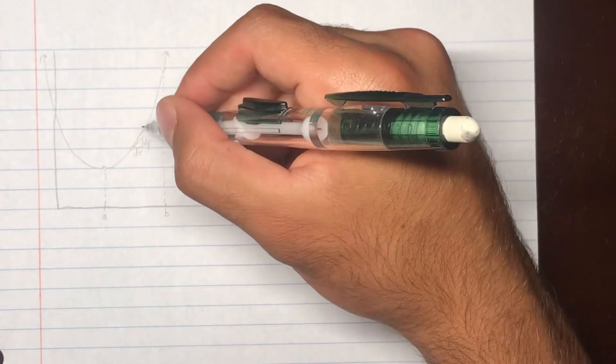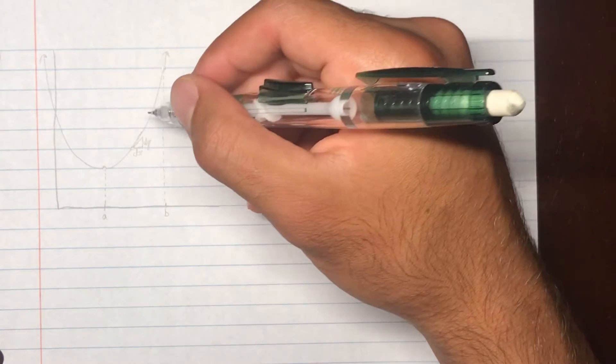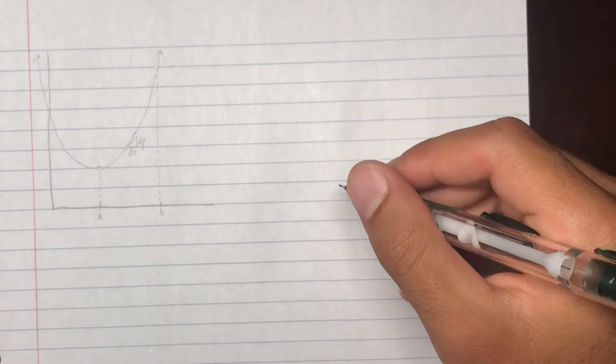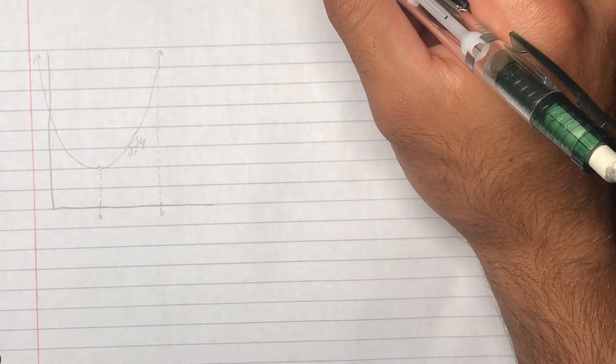So, now that we have a right triangle, we can use the Pythagorean theorem. So, we know that a squared plus b squared equals c squared.